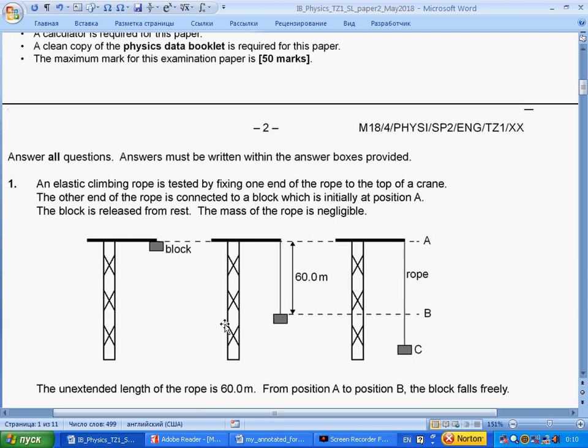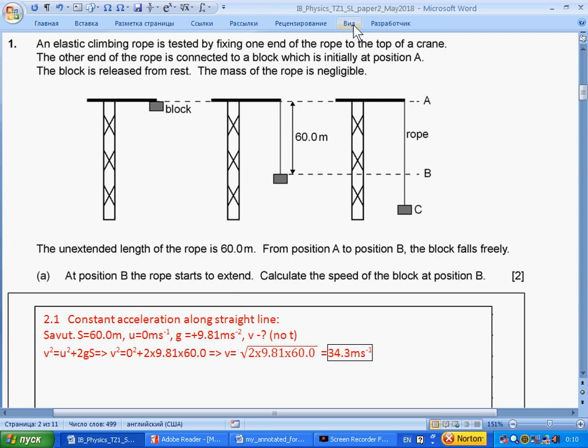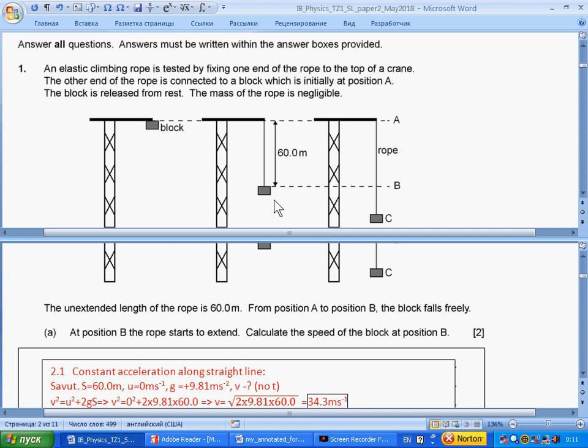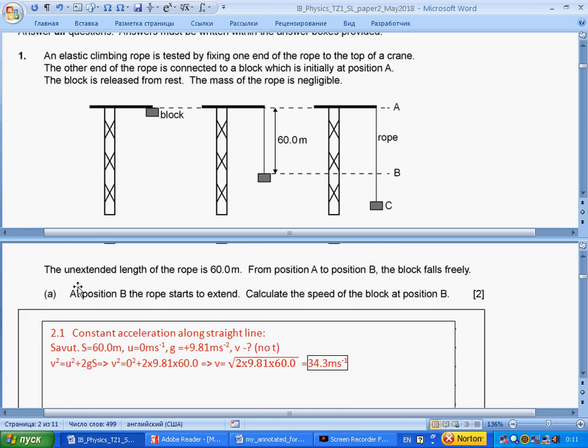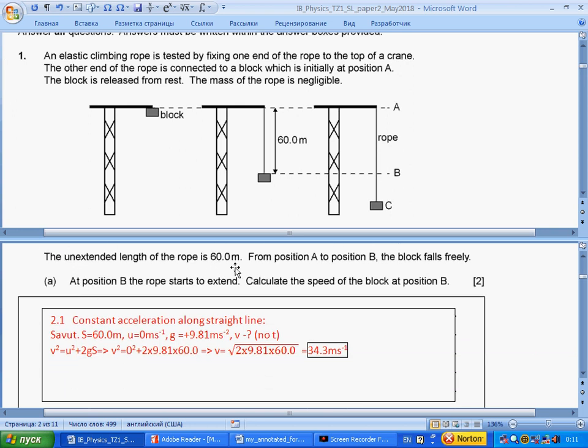Question 1. An elastic climbing rope is tested by fixing one end of the rope to the top of a crane. The other end of the rope is connected to a block, which is initially at position A. The block is released from rest. The mass of the rope is negligible. The unextended length of the rope is 60 meters. From position A to B, the block falls freely. At position B, the rope starts to extend. Calculate the speed of the block at position B.